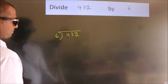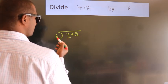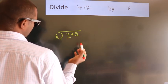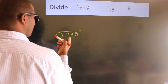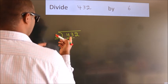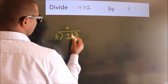Next. Here we have 4, here 6. 4 smaller than 6, so we should take 2 numbers: 43. Our number close to 43 in the 6 table is 6 times 7 equals 42.